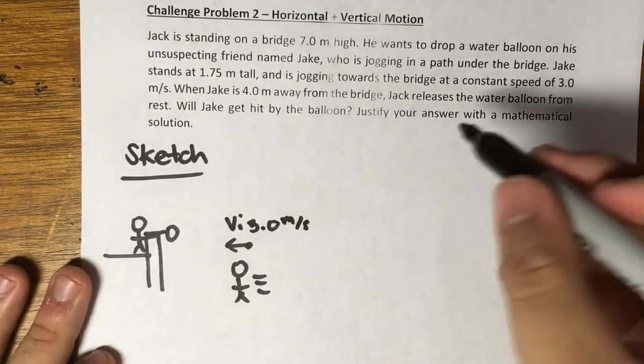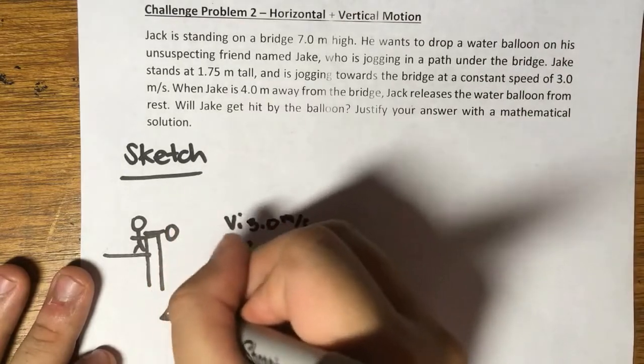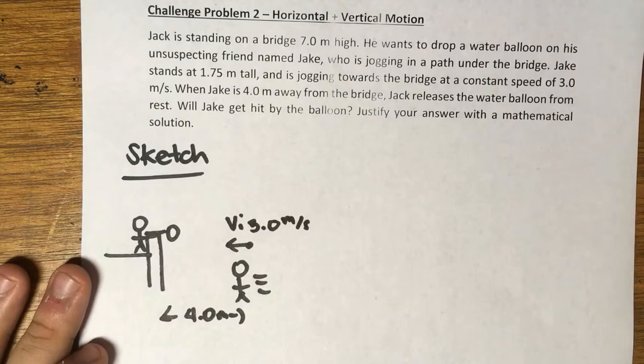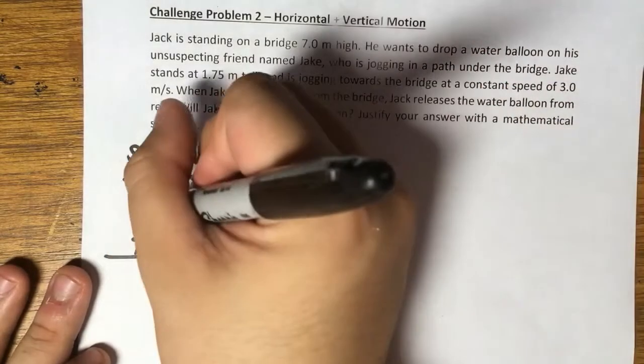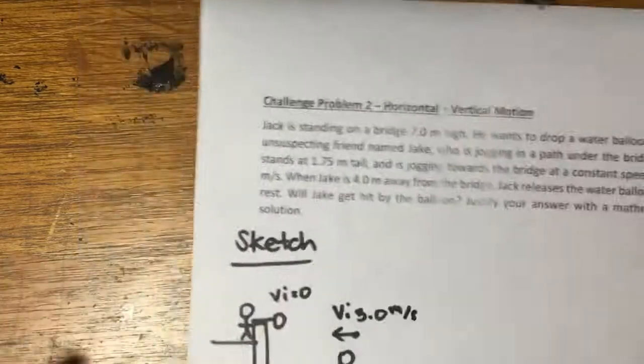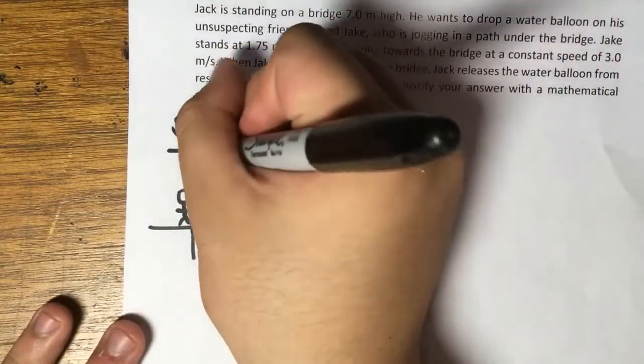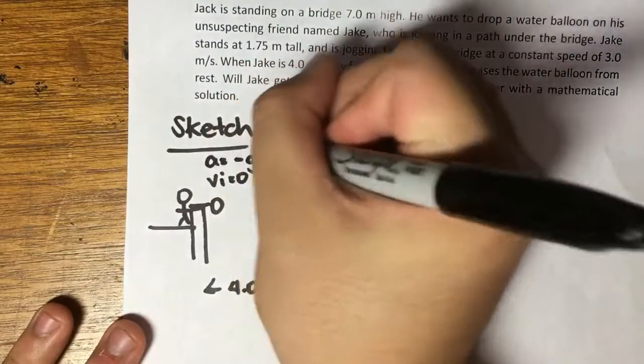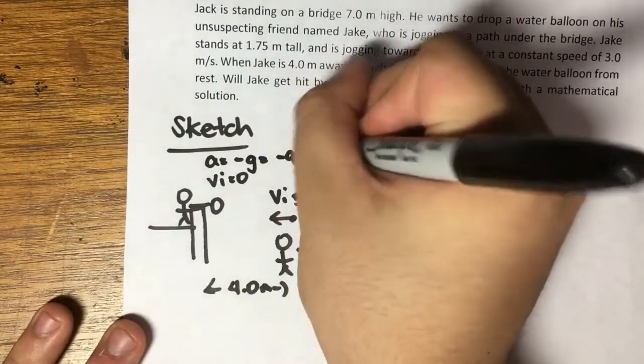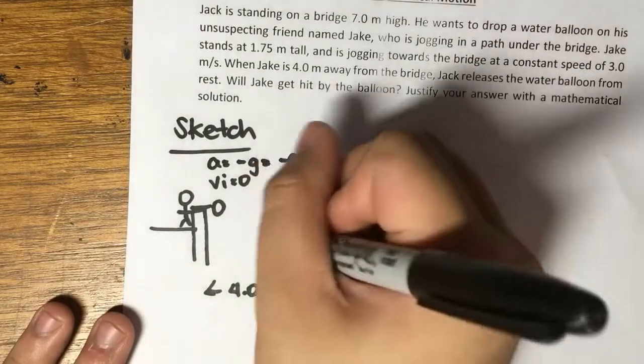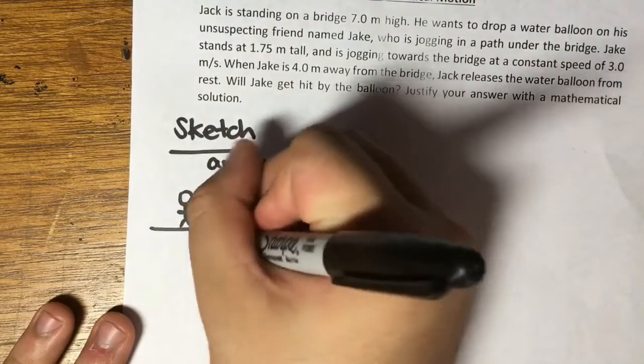We also know that he is 4 meters away from the bridge. We know that Jack drops the water bomb from rest, so vi is equal to zero for the water bomb. We also know that gravity will act on this and therefore a is equal to negative g, negative 9.8 meters per second squared.